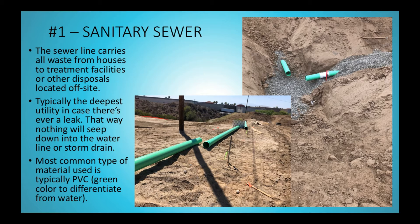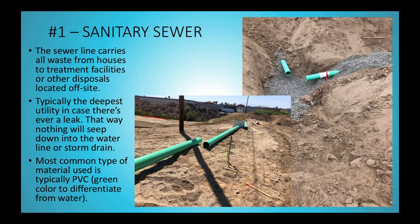The first one I want to talk about is the sanitary sewer. The sewer line carries all the waste from your house and it carries it to treatment facilities or other disposals located off-site. It's typically the deepest utility, just in case there's ever a leak — nothing will ever seep out of the pipe and drain into the water or the storm drain below. The most common type of material I've seen for this is PVC, and it's green just to differentiate from the water lines. I've also seen VCP, which is vitrified clay pipe, used for sewer, but for the most part it's more common to see PVC.